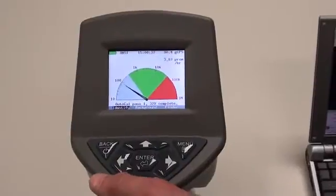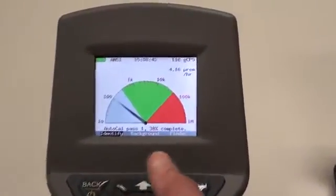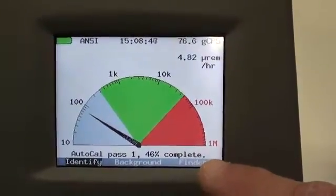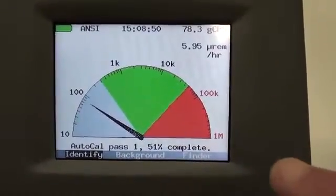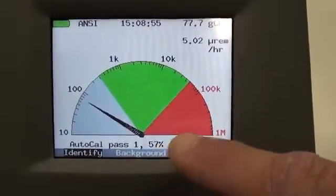The first screen that you'll see is a count per second display. As you can also see, when you first power up, it'll do an automatic calibration using a potassium K40 source. You can see the background level right now is less than 100 counts per second.